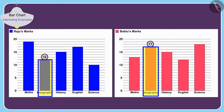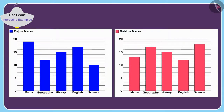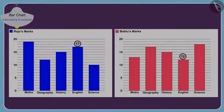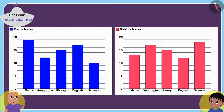If we look closely, in geography Babloo has got 17 marks and Raju has got 12 marks, so Babloo has got five marks more than Raju in geography. In English, Babloo has got 12 marks and Raju has got 17 marks, so Babloo got five marks less than Raju in English.